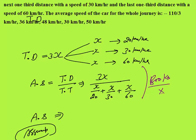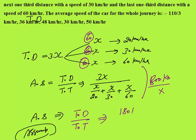Take x = 60. Average speed = total distance ÷ total time. Total distance = 60 + 60 + 60 = 180 km. Time: 60 ÷ 20 = 3 hours, 60 ÷ 30 = 2 hours, 60 ÷ 60 = 1 hour. Average speed = 180 ÷ 6 = 30 km per hour.